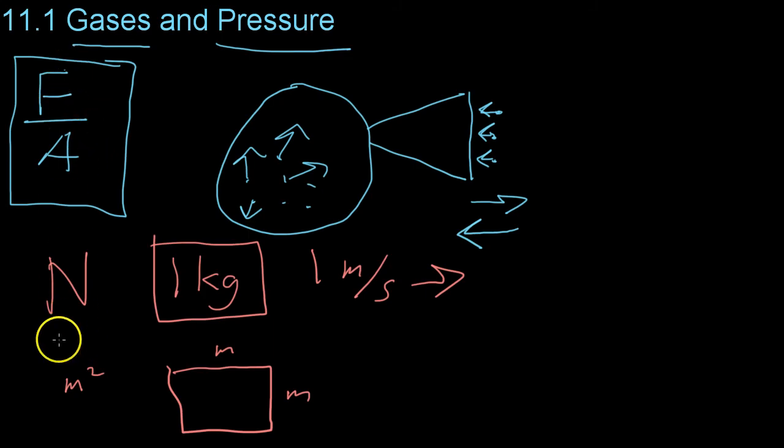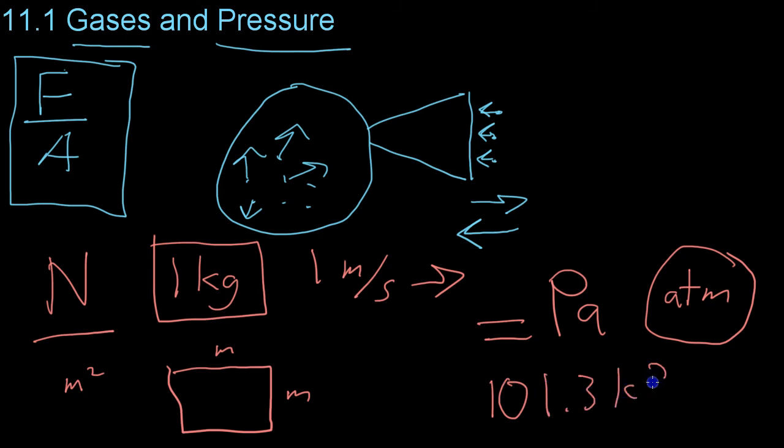And finally, the pressure, which is the force over the area, is something called the Pascal. We're also going to be using a unit of pressure called the atmosphere, and that is just the standard atmospheric pressure at sea level. And that is equivalent to 101.3 kilopascals.